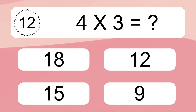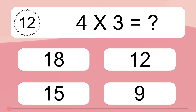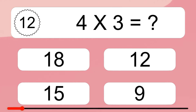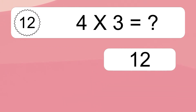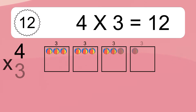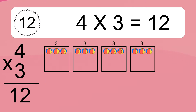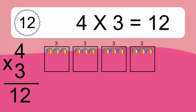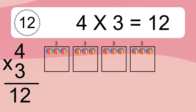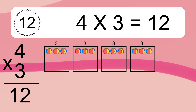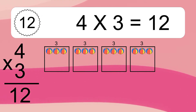4 times 3 equals what? 4 times 3 equals 12. We have 4 boxes and each box has 3 colorful balls inside. If you count all the balls in all the boxes together, you will have 4 times 3 balls. This equals 12 balls.